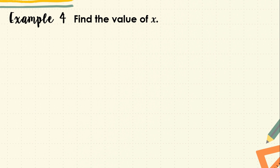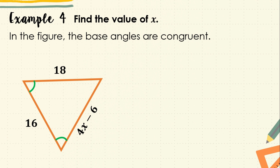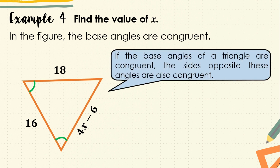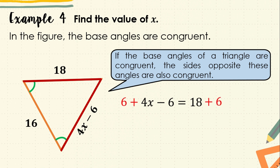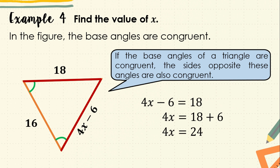Now let's have example number four — find the value of X. In the figure, the base angles are congruent. Remember that if the base angles of a triangle are congruent, then the sides opposite these angles are also congruent. Therefore, 4X minus 6 is equal to 18. Adding 6 to both sides gives 4X equals 24. Dividing both sides by 4, therefore X is equal to 6.